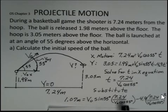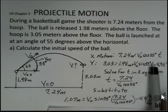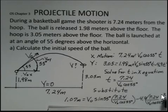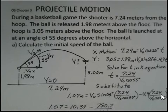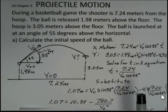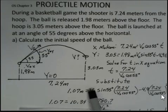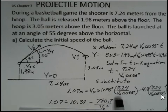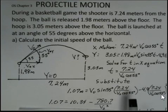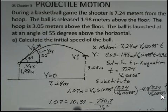Time to the first power has been replaced with 7.24 over V0 cosine 55, and the substitution in the squared term gives us minus 4.9 times that quantity squared. Notice the V0s cancel — there's a V0 in the numerator and a V0 in the denominator from that first term. So we won't have a full quadratic equation. Evaluating sine of 55 times 7.24 over cosine of 55 on your calculator should give you 10.34.